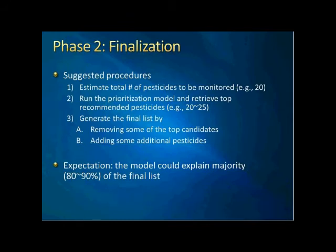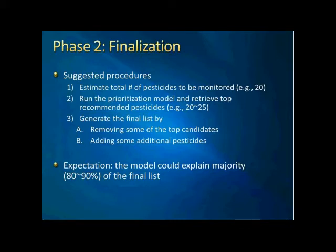I suggested some general procedures to use the modeling results. First, estimate the total number of pesticides based on the project design and budget. Then run the model and retrieve the top recommended pesticides according to this number — perhaps 20 or slightly more because of method constraints. Finally, make adjustments by removing some model-recommended pesticides and adding more from outside the results. We should also document the justification for those modifications.